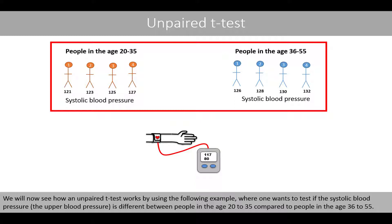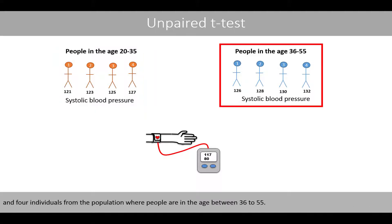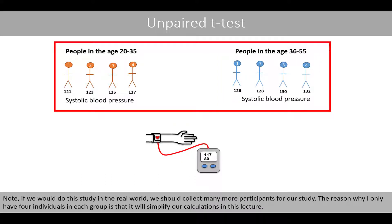We will now see how an unpaired t-test works using the following example, where one wants to test if the systolic blood pressure — the upper blood pressure — is different between people in the age 20 to 35 compared to people in the age 36 to 55. To test this, we collect four random individuals from the population aged 20 to 35 and four individuals from the population aged 36 to 55. Note that in a real-world study we should collect many more participants; the reason for only four individuals per group is to simplify calculations in this lecture.